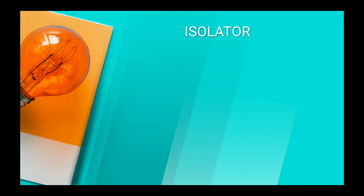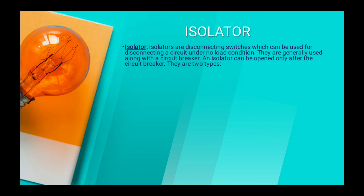Now the next circuit interruption device is the isolator. Isolator means the isolation switch which isolates the healthy electrical part or healthy electrical line from the faulty line. Isolators are disconnected switches which can be used to disconnect a circuit under no load condition. You can't use it in full load or on-load condition. They are generally used along with the circuit breaker, and the isolator can be opened only after the circuit breaker. The circuit breaker operates in on-load condition and the isolator operates in off-load condition.